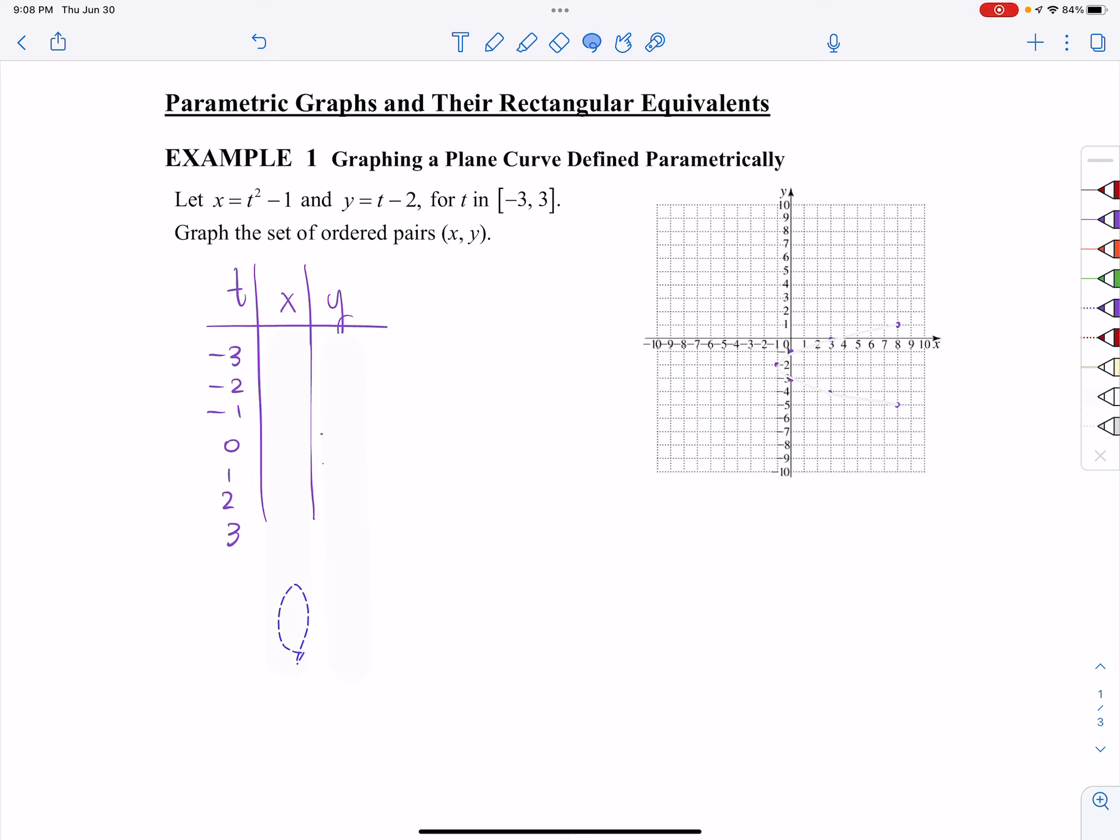Alright, so if I'm focused on the x equation, negative 3 squared minus 1 is going to be 9 minus 1, which is 8. Negative 2 squared minus 1 is going to be 3. Negative 1 squared minus 1 is going to be 0, etc. I'm not going to walk you through all of that, but here's going to be a list of all of the x values.